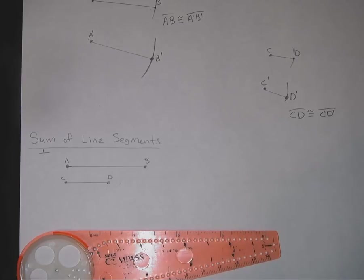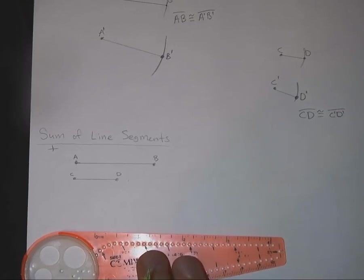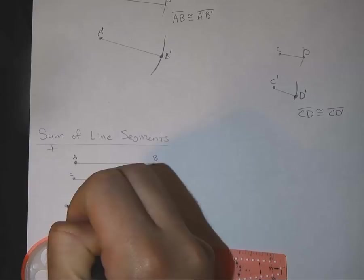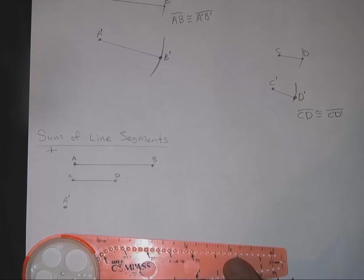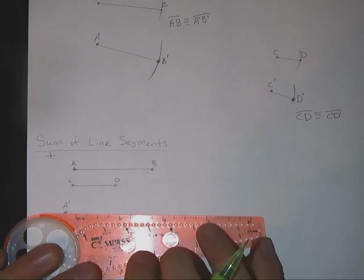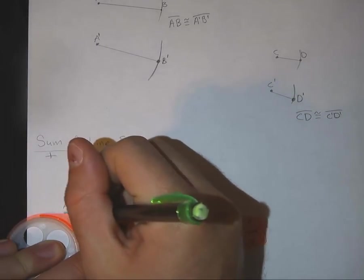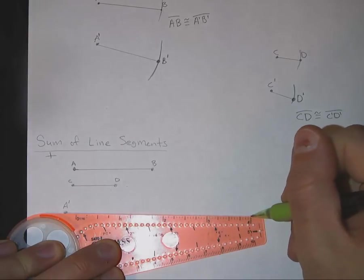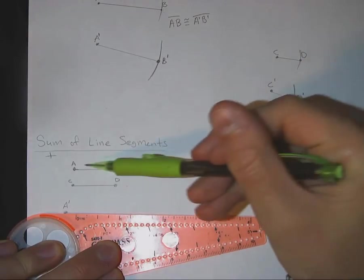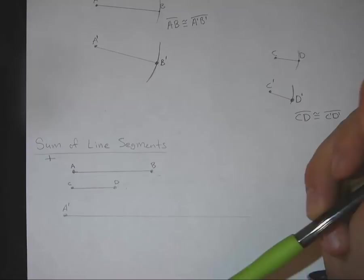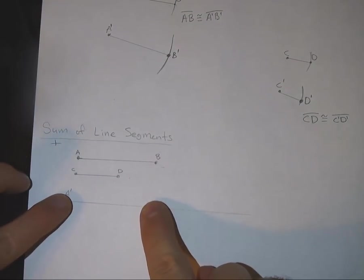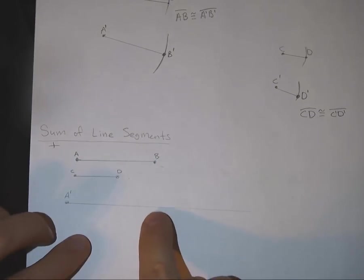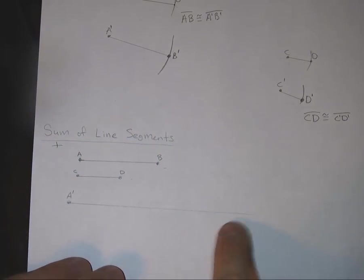So actually what I'm going to do first here is I'm going to plot a point down. I'm going to call that A prime, and I'm going to draw a line. Now I'm going to make that line long enough to where it looks like it's going to accommodate or take on both AB and CD. This line is definitely long enough. We'll show you what to do with the excess here in a second.